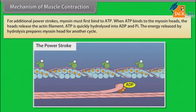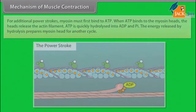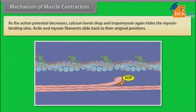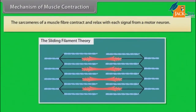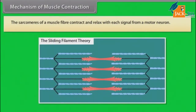For additional power strokes, myosin must first bind to ATP. When ATP binds to the myosin heads, the heads release the actin filament. ATP is quickly hydrolyzed into ADP and Pi, and the energy released by hydrolysis prepares the myosin head for another cycle. As the action potential decreases, calcium levels drop and tropomyosin again hides the myosin binding sites. Actin and myosin filaments slide back to their original positions, and the sarcomeres of a muscle fiber contract and relax with each signal from a motor neuron.